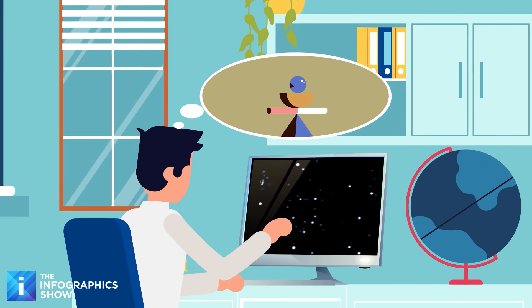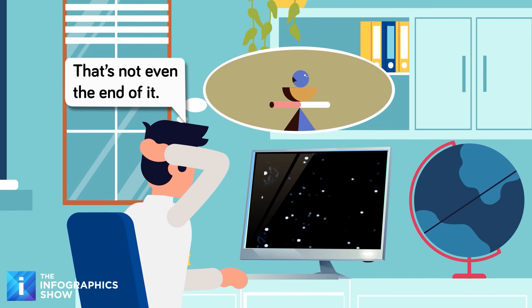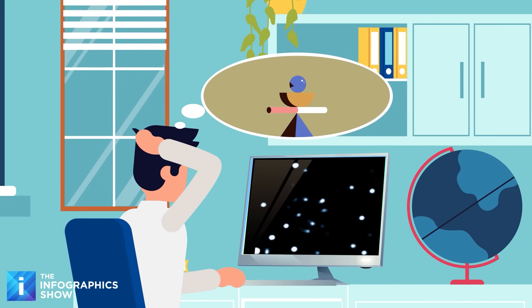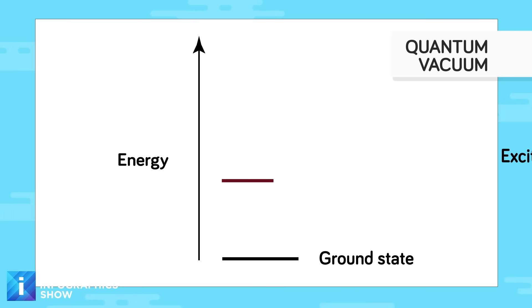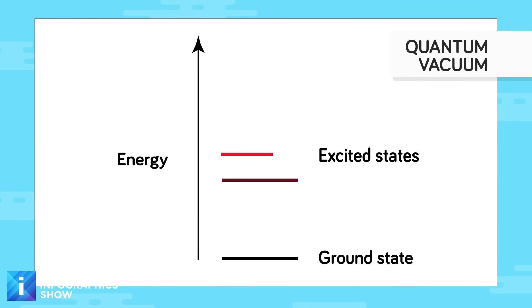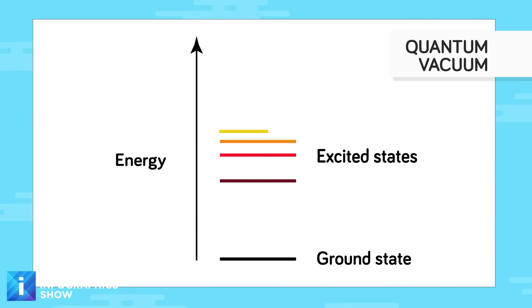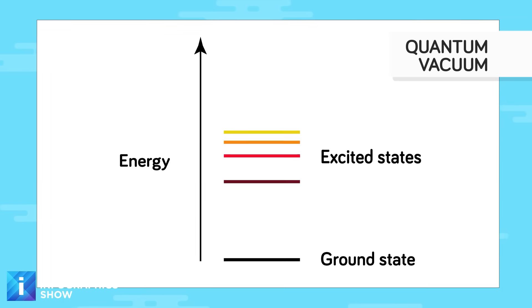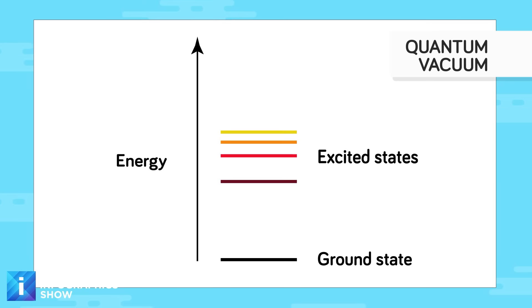After all massive particles evaporate and all energy gradients disappear, the universe might continue its relentless march toward absolute nothingness. Even the tiny amount of energy represented by the cosmic microwave background might eventually dissipate through processes we don't yet understand. The universe's final temperature would approach absolute zero not just practically, but theoretically. In that state, even the quantum vacuum energy that drives virtual particle creation might be exhausted.